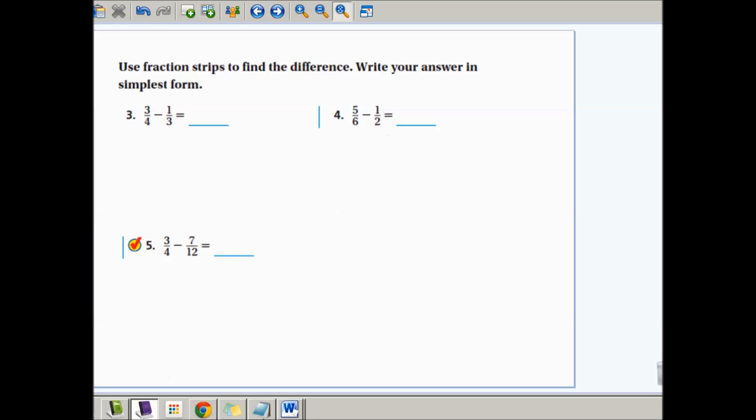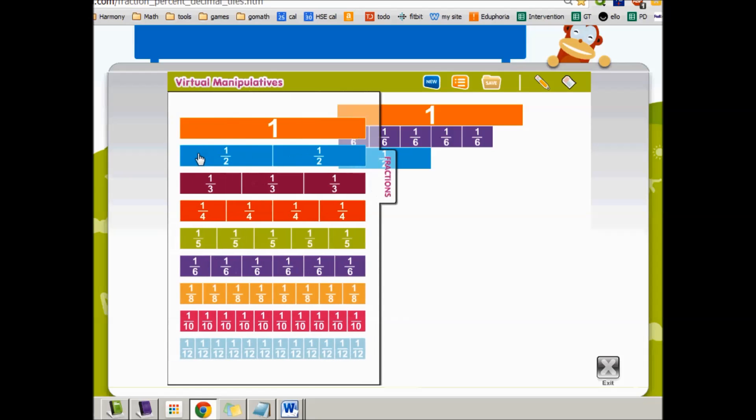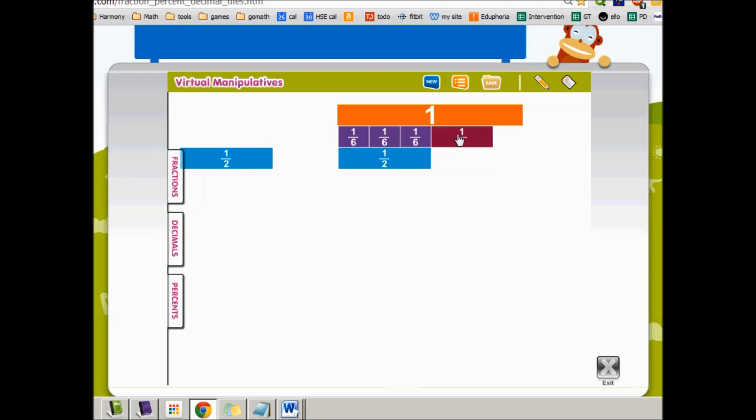Now I have 5 sixths minus 1 half. So here's 5 sixths minus 1 half. I put the 5 sixths up here and the 1 half here. And I need to figure out what fits in this space. Well, I can already see 2 sixths fits in this space. But if I look at 2 sixths, both the top and bottom are even. So that means I can simplify it. So I'm going to simplify it by putting a 1 third here. And that fits perfectly.